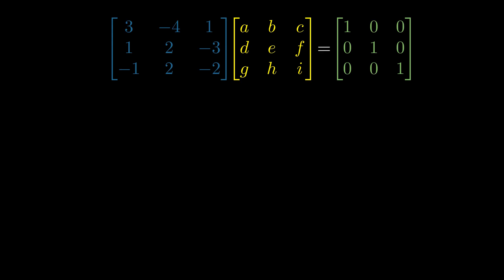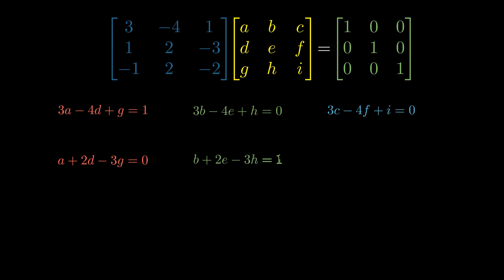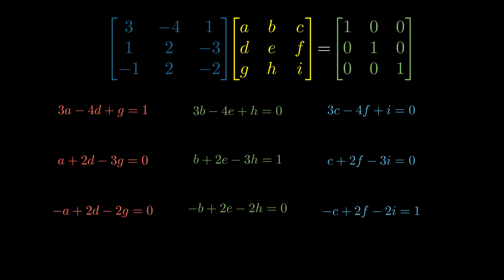When we multiply these two matrices together, we get equations. For example, the first equation is 3A minus 4D plus G equals 1. There are nine entries in the matrix, so we get nine equations. We can group these into groups of three — each group forms one system of linear equations with three equations and three unknowns, so they can theoretically be solved.